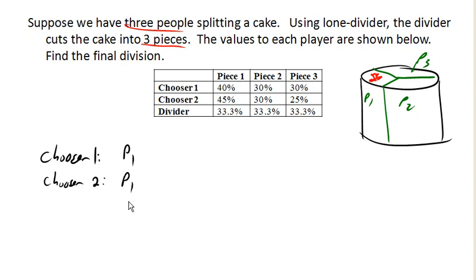Now, we have two pieces that are uncontested, piece two and piece three. And so what we're gonna do is we're going to flip a coin to decide which piece the divider gets, because the divider's happy with any of them. So we flip a coin here, and we conclude that piece two goes to the divider.